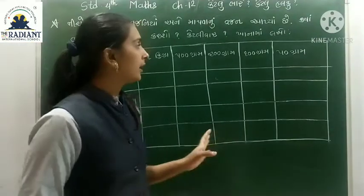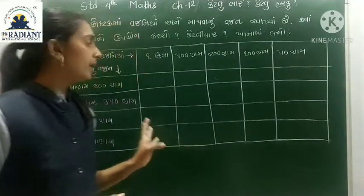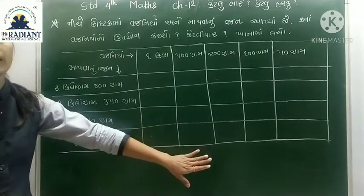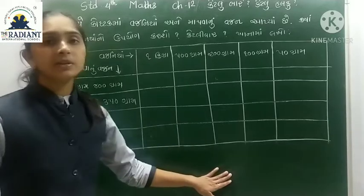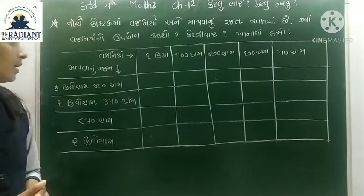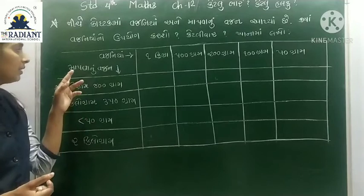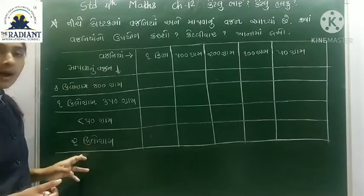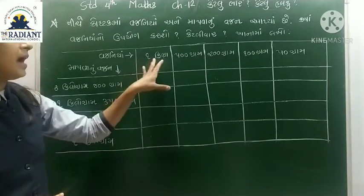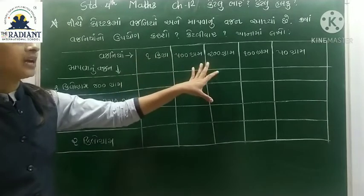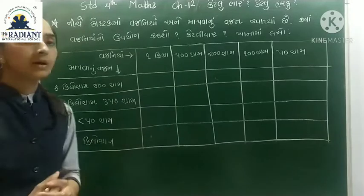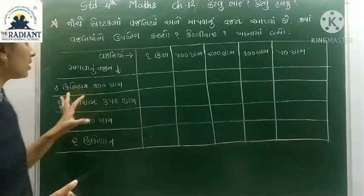હવે, ત્યાં ગાડી — તમને જે વજન આપ્યું હોય એ વજન સંતુલન કરવા માટે, આ વજનો (weights) માંથી તમારે કેટલા વજના જોઈએ? તે તમારે લખવાના છે. ત્યાં ગાડી — તમને માપ આપ્યું છે, અહ્યા ગાડી વજના આપ્યા છે. કેટલા ઉપયોગ માં લેશો, કેટલી વાર લેશો?